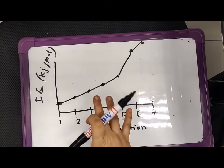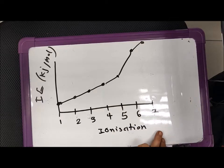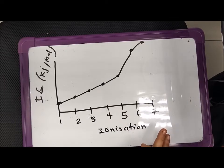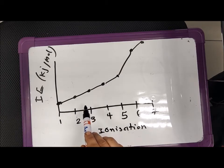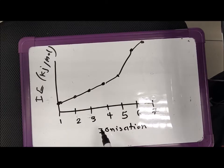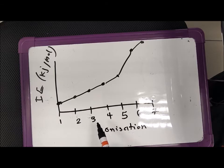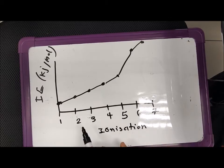Sometimes if you plot the successive ionization energies on a graph, we can guess something about how electrons are arranged in the atoms. If you look at this graph, there are two things it tells you: there is a gradual increase in the IE as we remove the first several electrons, because each time we remove an outer electron, the remaining electrons in the outer shell are pulled slightly closer to the nucleus, meaning greater attraction, which causes the IE to gradually increase.